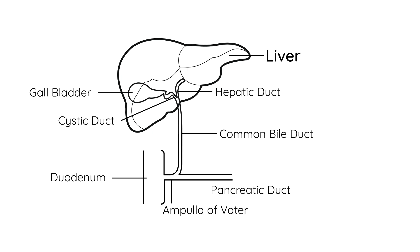Right at the opening there is a very special part of the anatomy known as the sphincter of Oddi. The sphincter of Oddi is a valve that controls the flow of things — such as bile and enzymes — from the ampulla of Vater into the duodenum. This is actually part of the treatment of biliary obstruction, which I'll explain later.